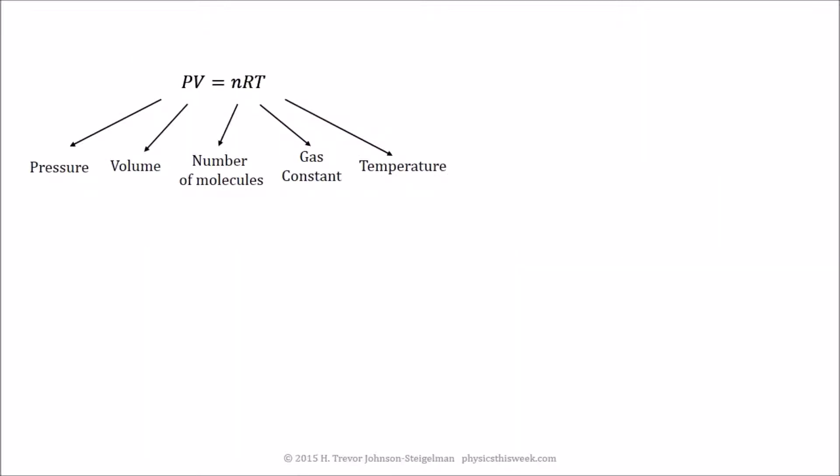The ideal gas law relates the pressure, volume, number of molecules, a thing called the gas constant, and the temperature all to one another. As you change one of these things, it has effects on all the others, unless you do something to try to keep one of them constant.